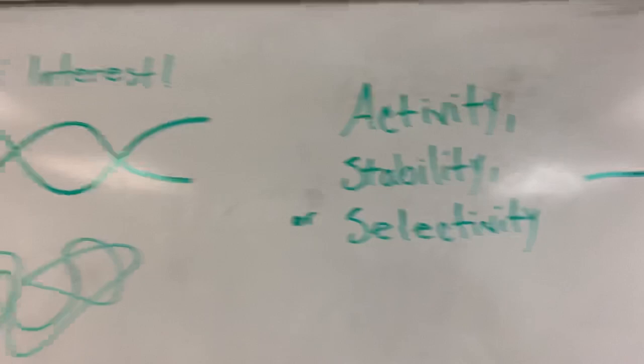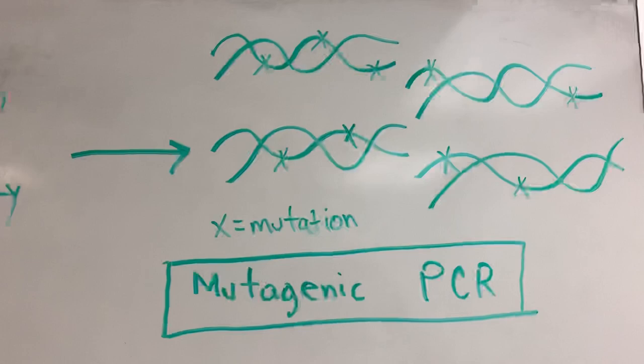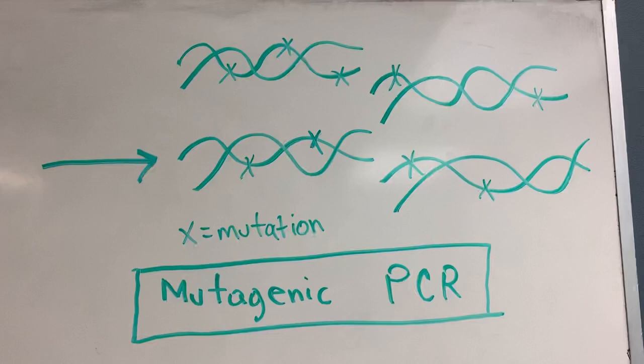Using your gene of interest as starting material, you want to do mutagenic PCR to that gene of interest, which is going to give you a gene library of variants.